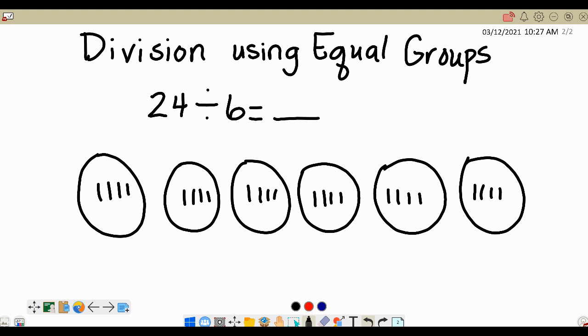To get the answer, I'm going to say 24 divided into 6 groups equals 4 because I'm just taking the answer from one group.